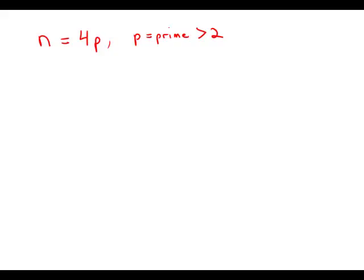If n equals 4p, where p is a prime number greater than 2, how many different positive, even divisors does n have, including n?